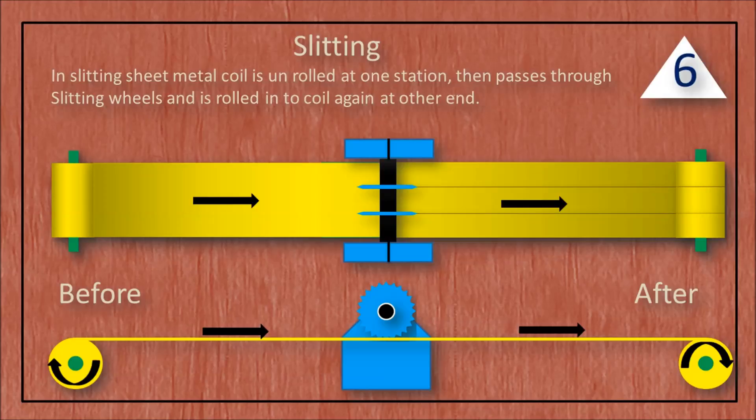In slitting, sheet metal coil is unrolled at one station, then passes through slitting wheels and is rolled into a coil again at the other end.